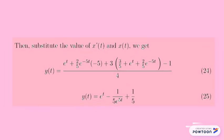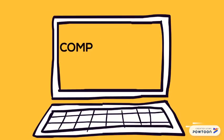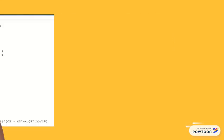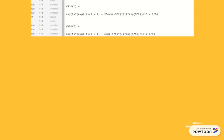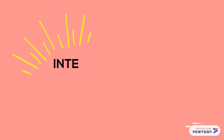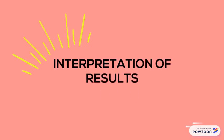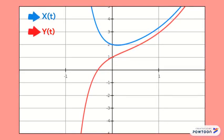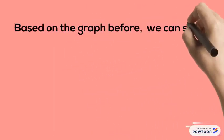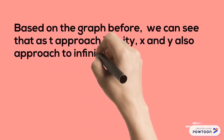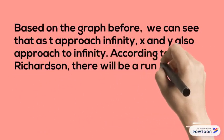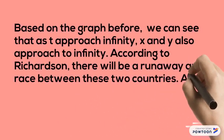Lastly, substitute the values of x'(t) and x(t) to find y(t). Based on the graph, you can see that as t approaches infinity, x and y also approach infinity.